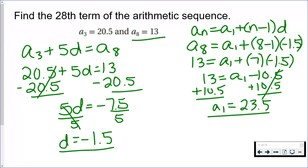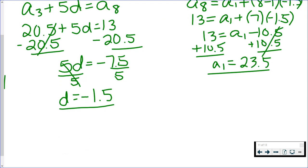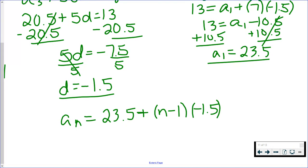So now we have our first term and our common difference, which means we can write our explicit formula. The first term is 23.5, common difference is negative 1.5. So this is our explicit formula. You can simplify it if you want, but I'm going to leave it like this. Doesn't really matter.